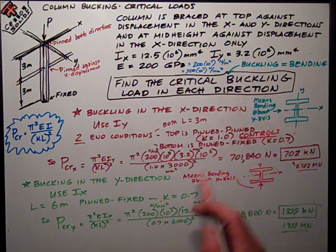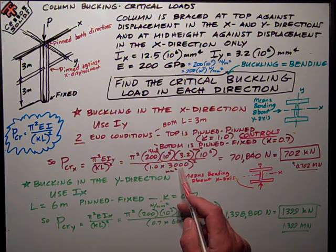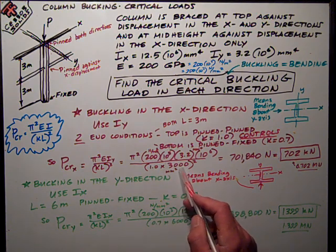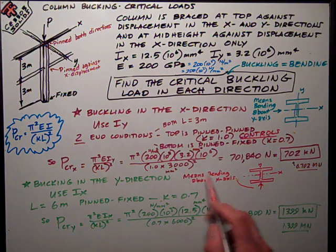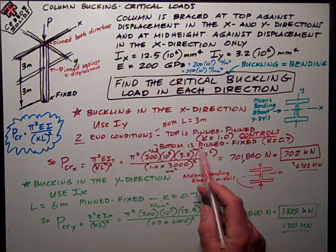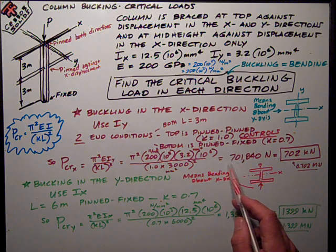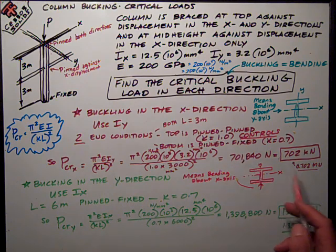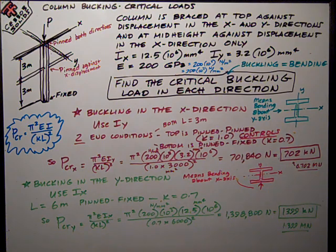I is just, IY is 3.2 times 10 to the sixth, divided by one for K, 3,000, I've converted the length in meters to millimeters, and then I square that. So, I've got newtons per millimeter squared, times millimeters to the fourth, divided by millimeters squared, comes up with 701,840 newtons, which is equal to 702 kilonewtons. So, that's one part of the problem.